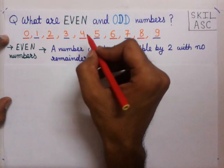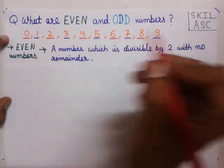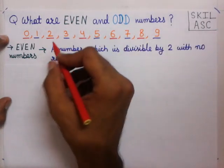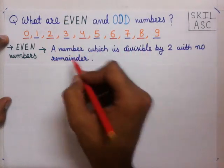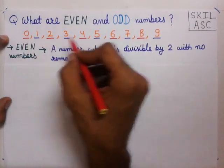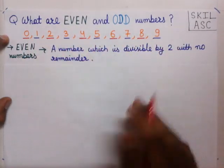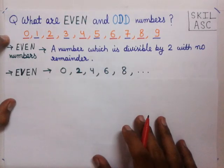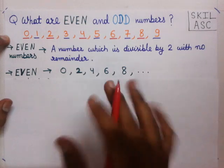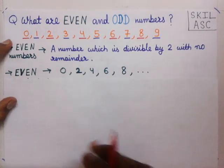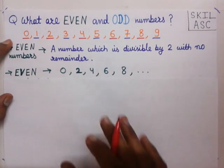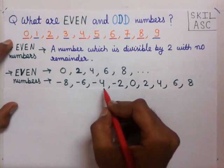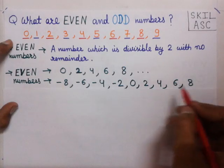Similarly, checking the other numbers, we find that 0, 2, 4, 6, 8 are divisible by 2 with no remainder. These numbers, marked in red, are even numbers. If we include negative numbers, the list of even numbers becomes: -8, -6, -4, -2, 0, 2, 4, 6, 8.